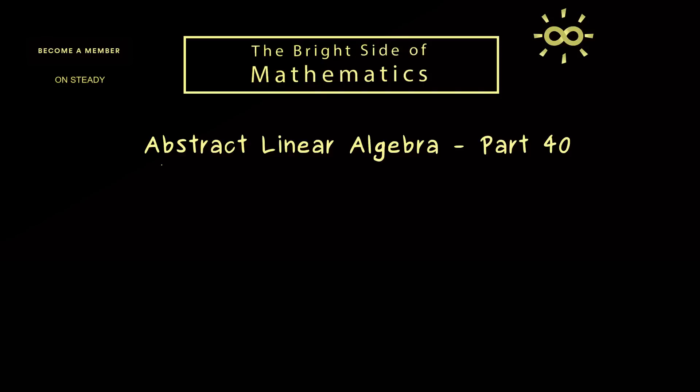Hello and welcome back to Abstract Linear Algebra, the video series about advanced topics in linear algebra. In today's part 40 we will talk about a special block diagonalization we have for a linear map and given invariant subspaces. As you might already guess, this result is what we will use to prove the Jordan Normal form.